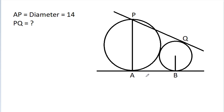In this video, we have given two touching circles. AB is tangent to both circles and PQ is tangent to the smaller circle. AP is the diameter of the bigger circle, that is 14. We have to find PQ.